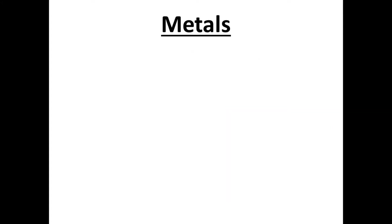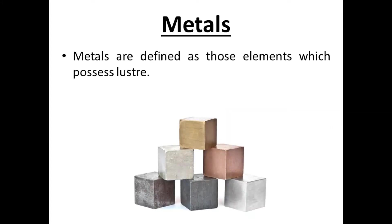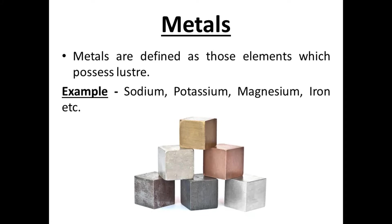First is metal. What is a metal? Metals are defined as those elements which possess luster — luster means shine. Those elements which shine, they are metals. For example, sodium, potassium, magnesium, iron, etc. So these all are metals.